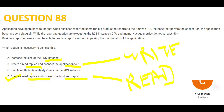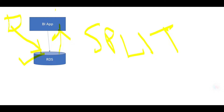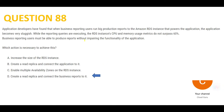You might ask about option C — enable Multi-AZ on the RDS instance. Thumb rule: Multi-AZ is used for disaster recovery, so that you do not lose data. Is there a disaster recovery use case here? No. This is a use case for performance management of reporting applications, which only read and do not write. So D remains the final answer.